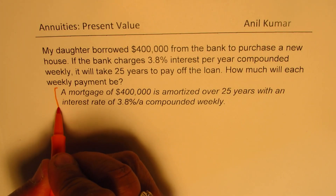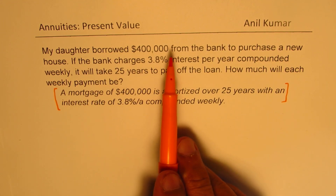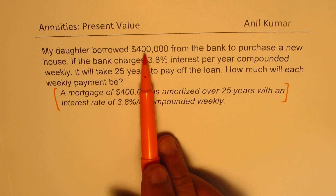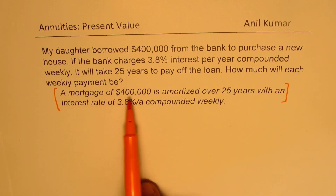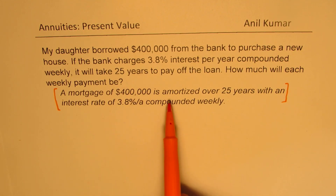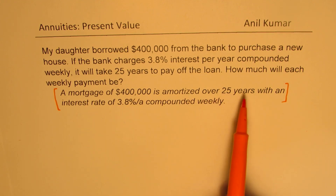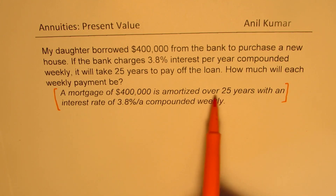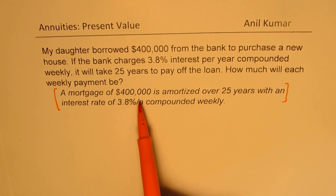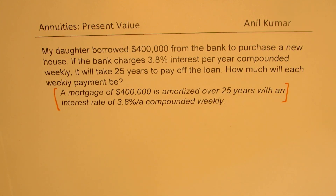Alternatively, we could also look at this problem as a mortgage. When you borrow a loan against a house, it is a mortgage of $400,000. The payment period is 25 years — we call it amortized. So it is amortized over 25 years, with an interest rate of 3.8% per annum, compounded weekly. These two are exactly similar questions.